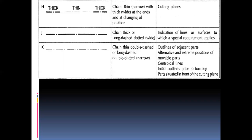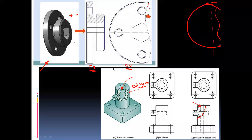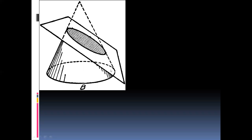The next type is the chain thin line with thick ends. This is used to represent the cutting plane position. In engineering graphics, we prepare some drawings where the object is cut by some imaginary plane. For example, we have one cone that is cut by an inclined plane — this is called the cutting plane.